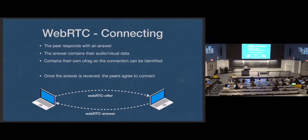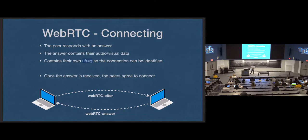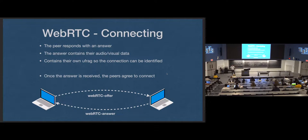One client is going to initiate the connection and say, 'I have a WebRTC offer. I would like to connect to you. Here's my unique ID, here's all the codec information. I would like to make this connection with you.' The other client, if they're willing to accept that WebRTC connection, is going to respond with an answer, which contains the same audio/visual information and their unique user identification. After this WebRTC handshake, that stream will be established.